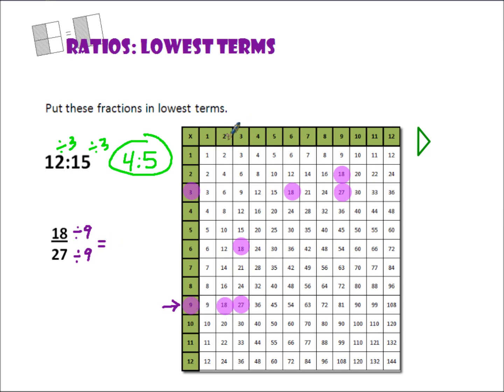9 will go into 18 two times, and 9 will go into 27 three times. Those two numbers are one number apart, so I know I'm in lowest terms. I'll circle 2 to 3 for my ratio in lowest terms.